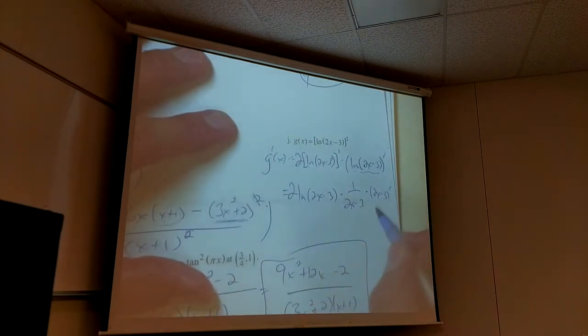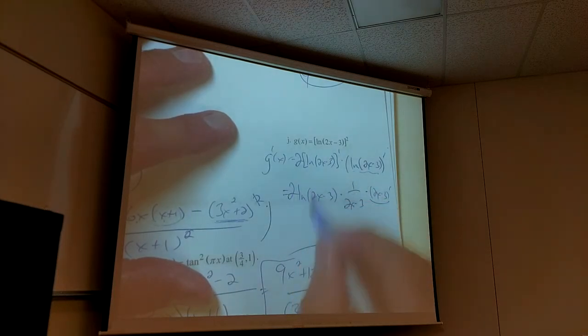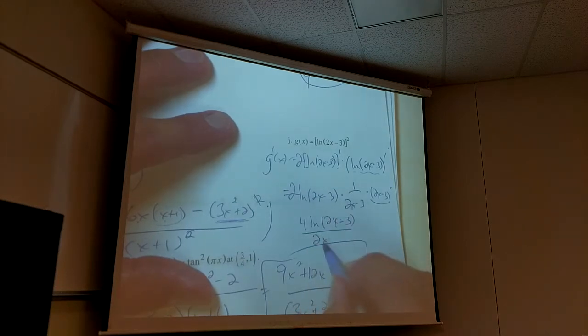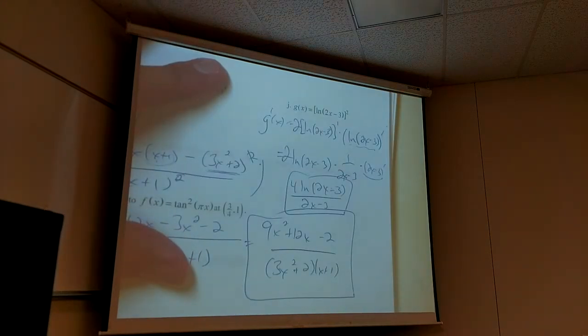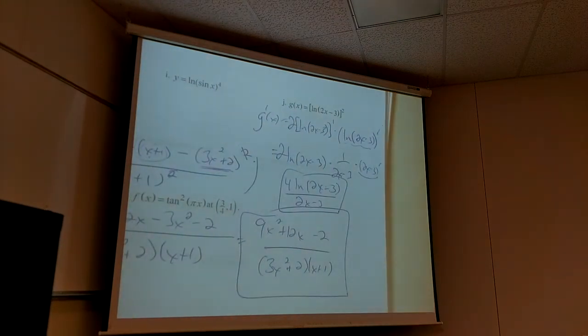So at the end, oh my god. So this is going to be 2. Is that cool? 2 times 2. So I get 4 ln of 2x minus 3 over 2x minus 3. Is that decent? Okay. That's everybody, right? All right. Let's take a break. If you guys need it. So do I. Okay.